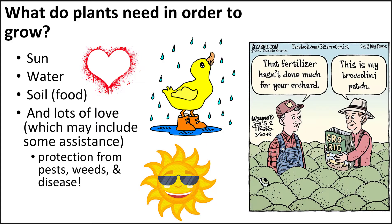For healthy growth, plants need these four elements. Sun, which is obviously difficult for farmers to control. Water — farmers can add more water in the form of irrigation, however it is difficult to subtract water if it rains too much. Soils can be augmented through fertilizer and other inputs to manage nutrients and pH.